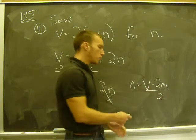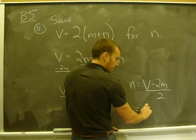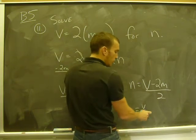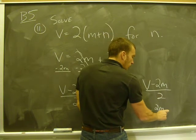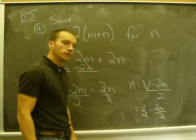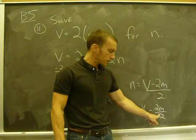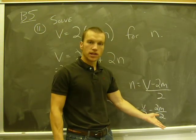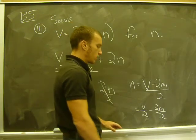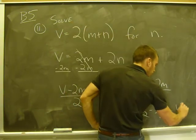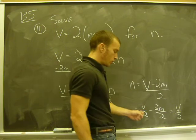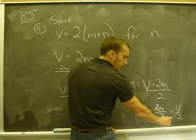So an equivalent answer would be v over 2 minus 2m over 2. And why would I do that? Well, I can get a little simplification with this term because 2m over 2 is just m. So my final answer could be v over 2 minus m.